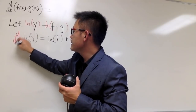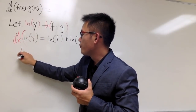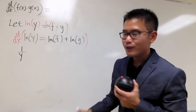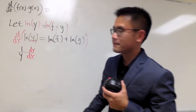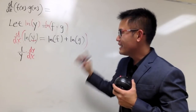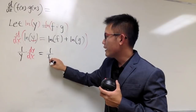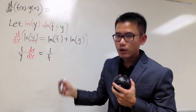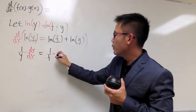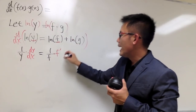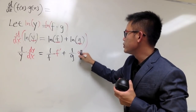So I'll put down d/dx across everything. On the left-hand side, the derivative of ln y gives us 1 over y, and because y is a function of x, by the chain rule we multiply by dy/dx. On the right-hand side, differentiating ln f gives 1 over f times f prime, since f is a function of x. Then we add the derivative of ln g, which is 1 over g times g prime.